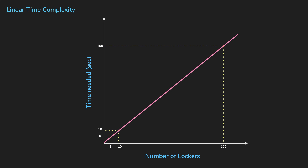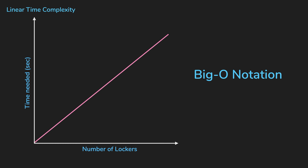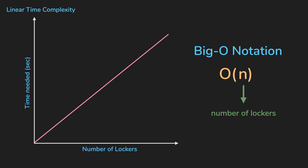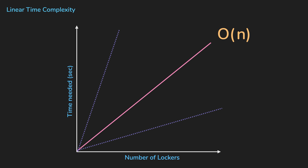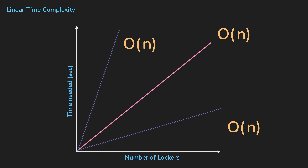In big O notation, this would be expressed as O(N), where N represents the number of lockers you'll need to scan. No matter how the line graph looks, when the time increases linearly to the input, the big O of the algorithm will still be O(N). For example, if it takes three seconds to check one locker instead of one second, or just half a second, you might find the book slower or quicker, but the big O will still be O(N).